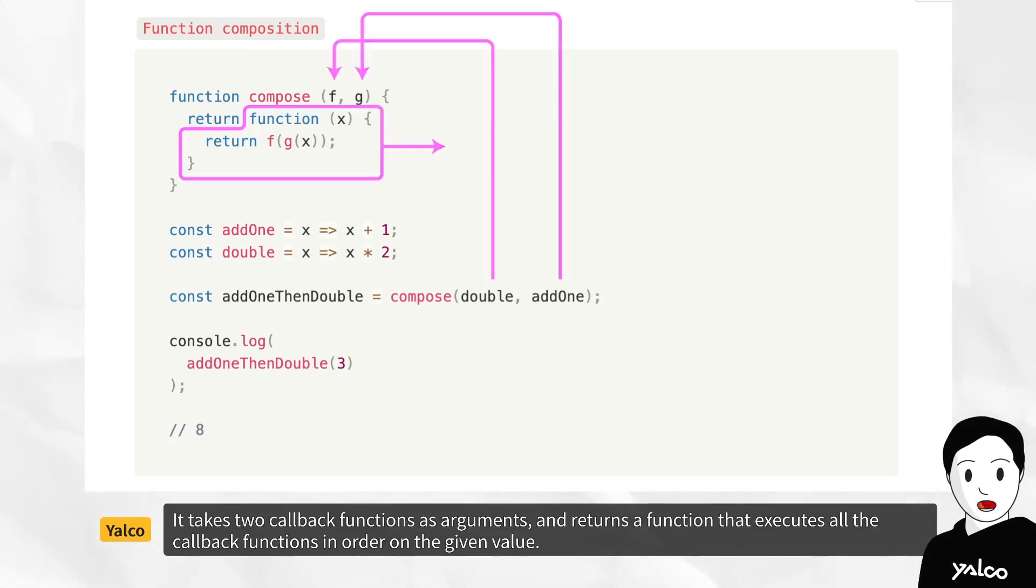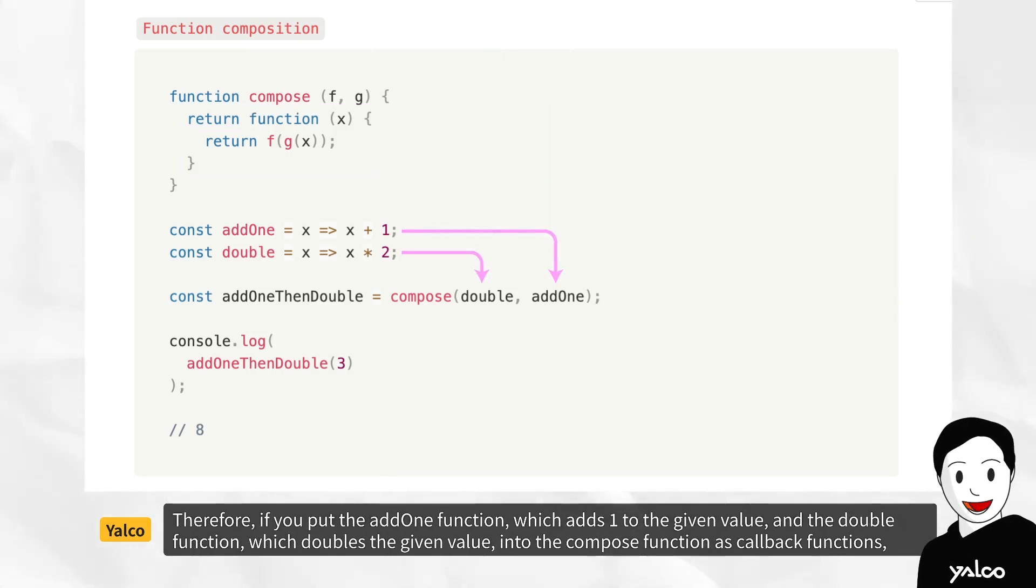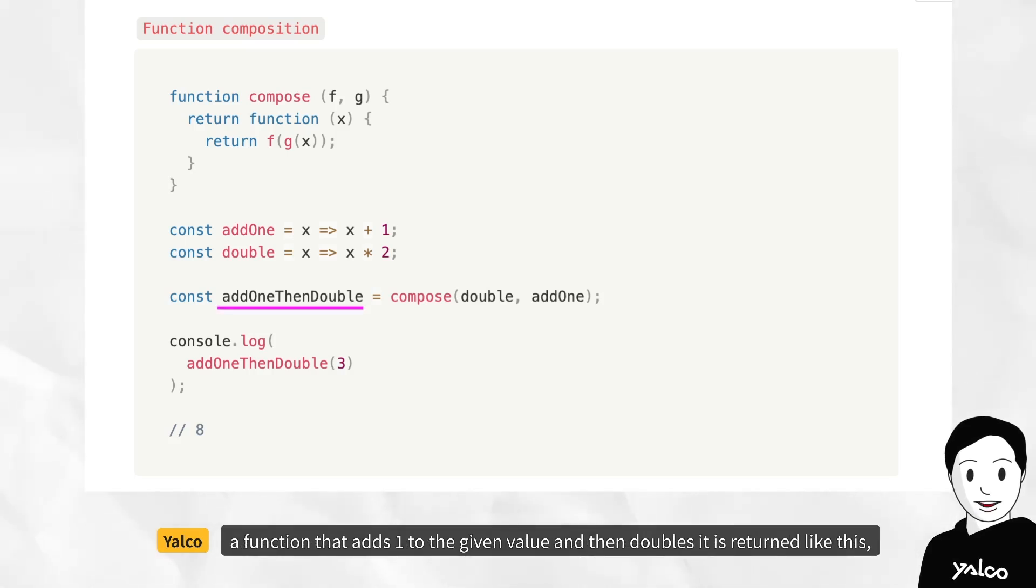I've told you higher-order functions not only accept functions as arguments but can also return them. This compose function is an example of a function that returns a function. It takes two callback functions as arguments and returns a function that executes all the callback functions in order on the given value. Therefore, if you put the add1 function, which adds 1 to the given value, and the double function, which doubles the given value, into the compose function as callback functions, a function that adds 1 to the given value and then doubles it, is returned like this.